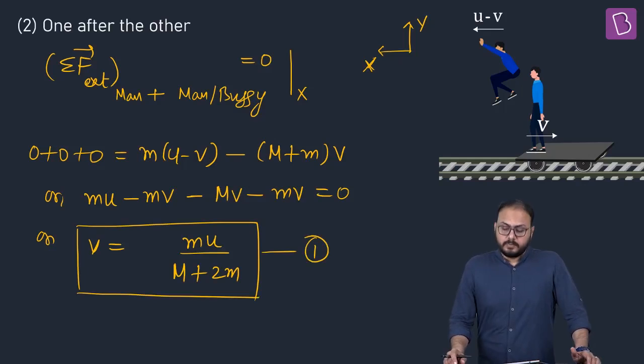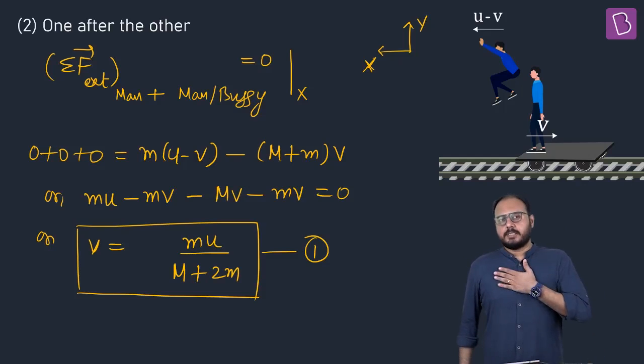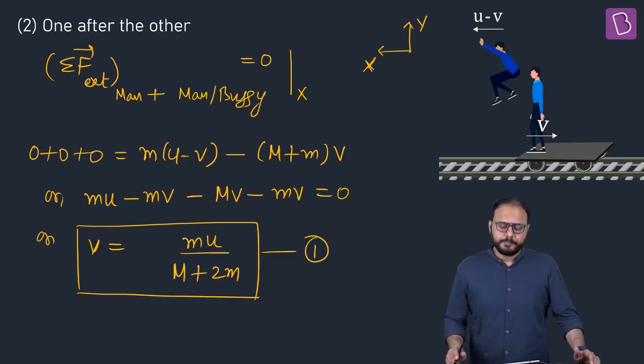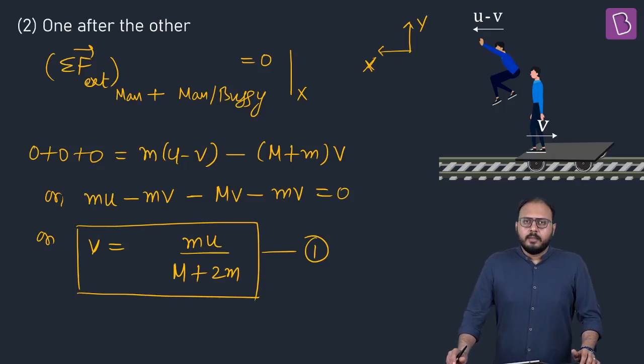What is this? This is the velocity of the buggy after the first man has jumped off. Take your time. Do you realize? The first man who has jumped off is unimportant now. He is gone. Out of the picture. Why? Jump is done. He has landed. Gone. Good for him.